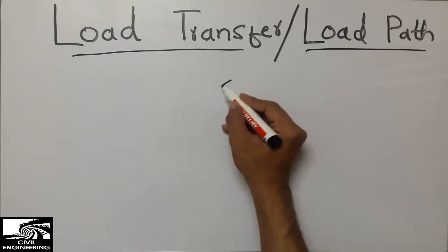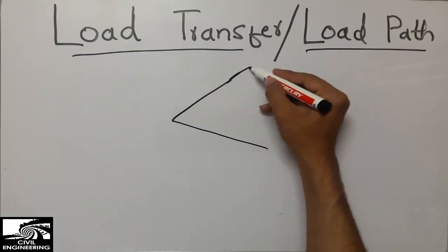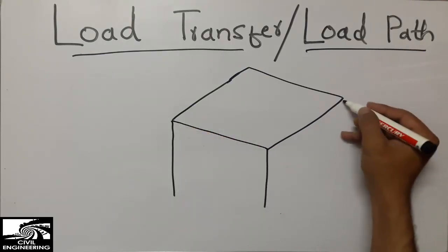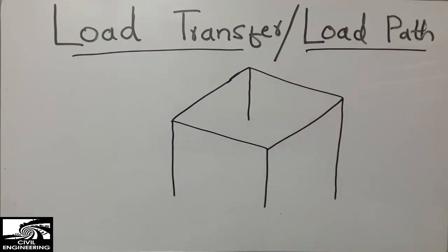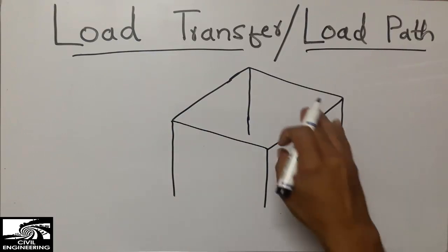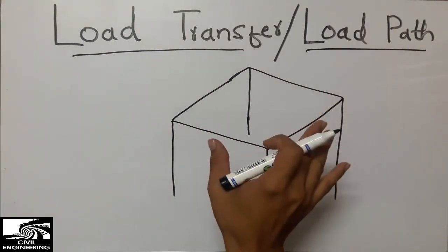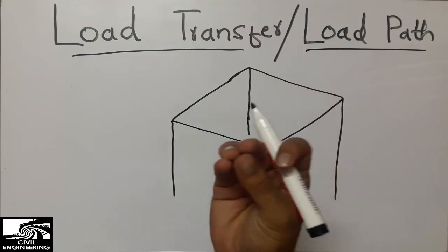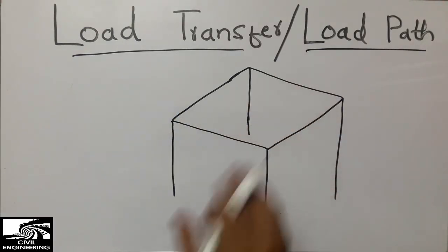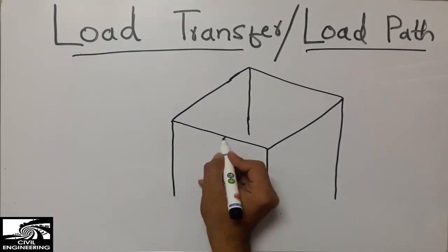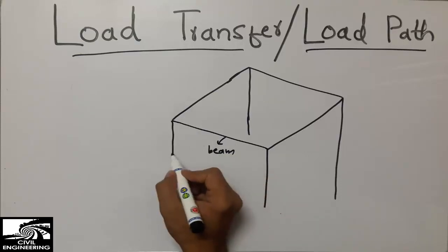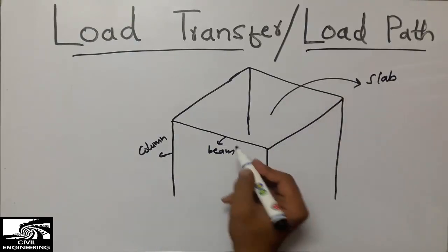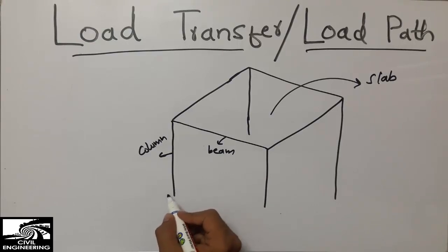I'm treating this as any building — it may be a simple one-story building, not a multi-story building. This is a one-story building, and this is the slab. The structure is mainly composed of certain components that work together. For example, the beam is a horizontal member of the structure, the column is a vertical member, and this is the slab.